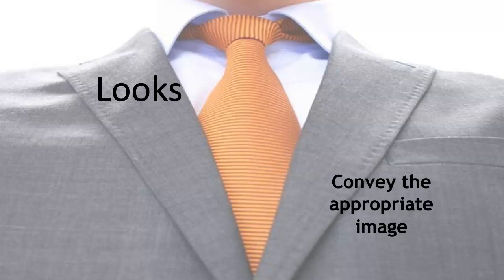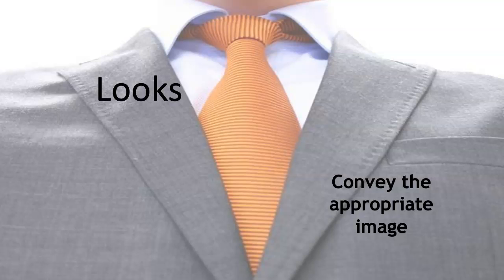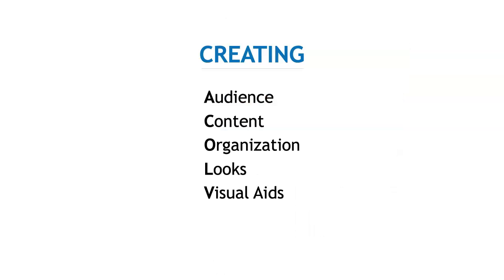Looks. Before you open your mouth, you design your appearance and create an impression. You need to convey the appropriate image — that's part of audience analysis. What would be the right way to dress for this situation? And finally, visual aids. You may not have them; they're not part of every talk. But if you have them, you create them before you ever say a word, and you need to make sure they're relevant. So before you open your mouth, if you think about the audience, put in the right content, organize it well, look the way you're supposed to look, and have visual aids that are powerful and compelling — you're ready to speak or to hit record.